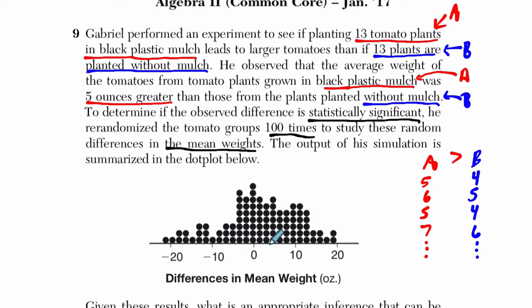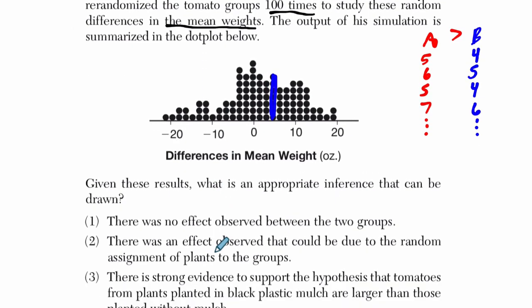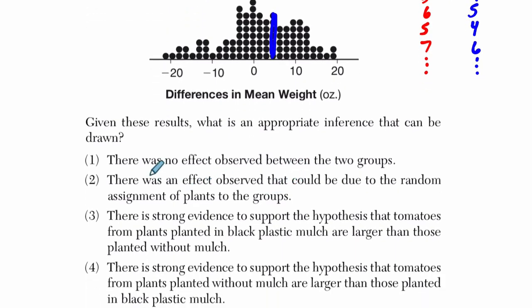You can see where five is about here. Just by randomly reshuffling tomatoes, you're getting a difference of five quite often, and you're getting a difference of more than five even more than that. So maybe a difference of like 20 ounces on average would be really significant, but 10, 5, 0 — that's not so significant. That's happening a lot in random shufflings, and so is five. They want us to say which is an appropriate inference that could be drawn here, and the answer is two. It says there was an effect observed — he observed an effect of five ounces — that could be due to the random assignment of plants to the group. It's possible to get five ounces just from the randomness, not from the black plastic mulch. That's a pretty fair inference.